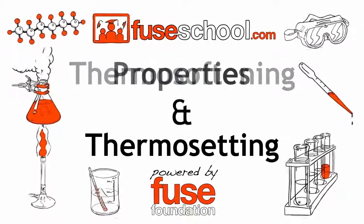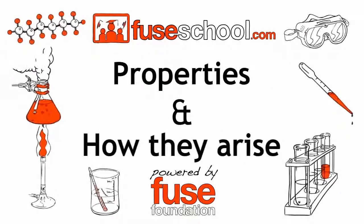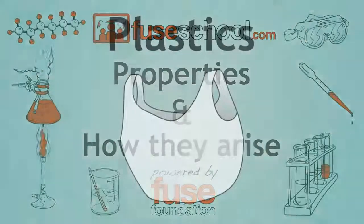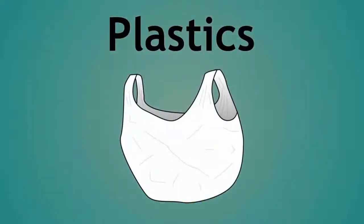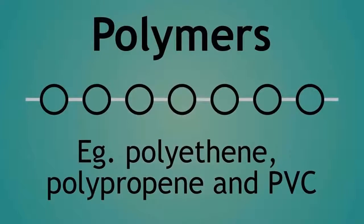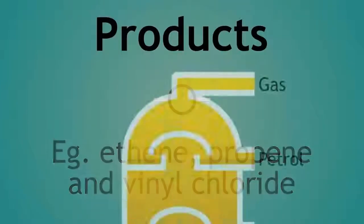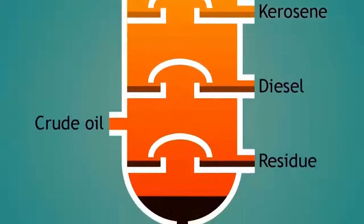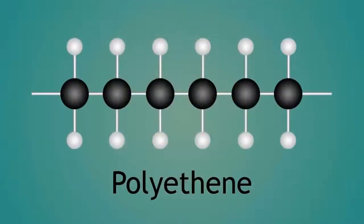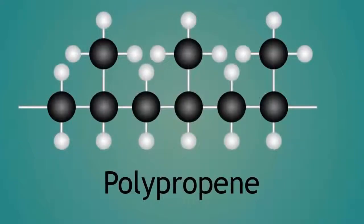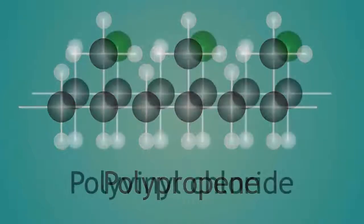We will also learn about their properties and how these properties arise. The term plastics is used to describe a wide range of polymers made of monomers, all derived from the products obtained from the fractional distillation of crude oil. You may be familiar with polyethene, polypropene, and even polyvinyl chloride.